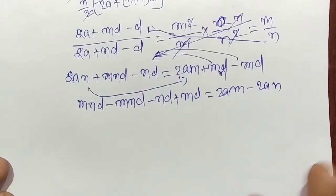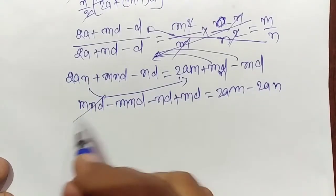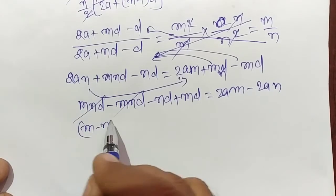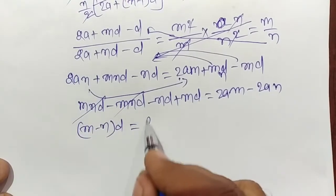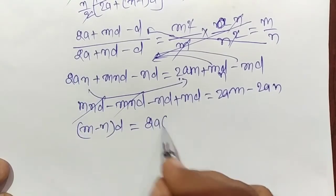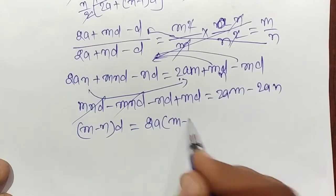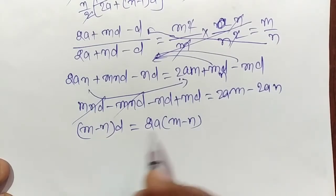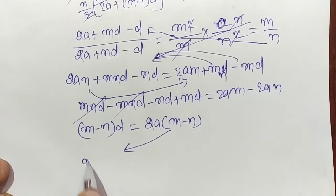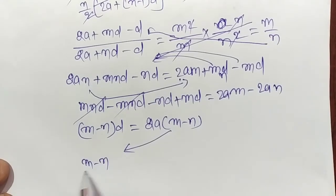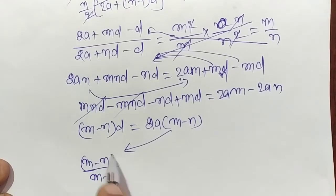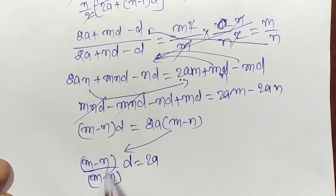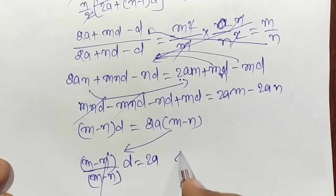mnd and mnd cancel out. We get (m - n)d = 2a(m - n). Dividing both sides by (m - n), it cancels out.